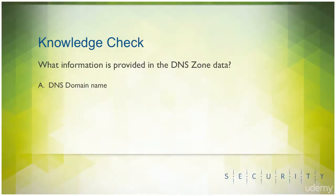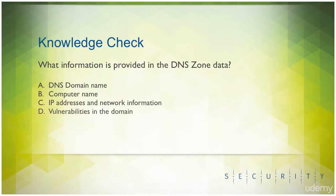Here's another question for you. What information is provided in the DNS zone data? Is it A, DNS domain name; is it B, the computer name; is it C, IP addresses and network information; or is it D, vulnerabilities in the domain?